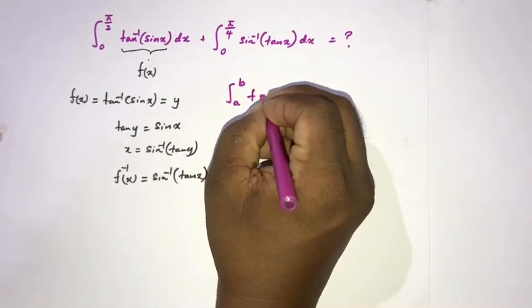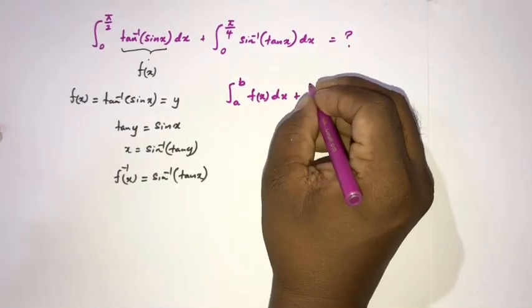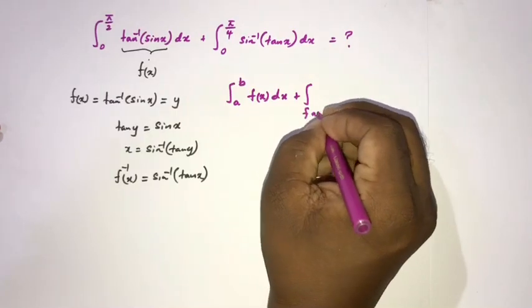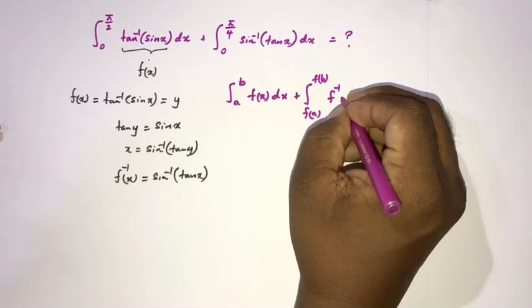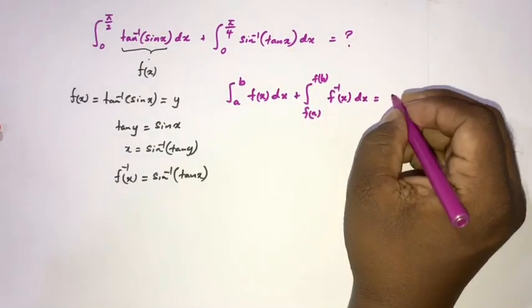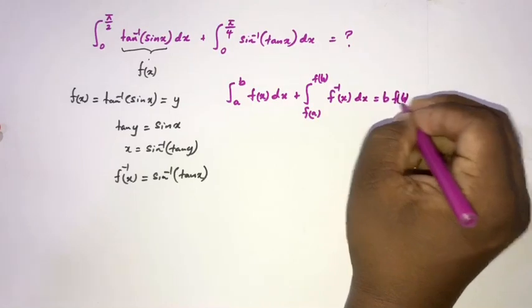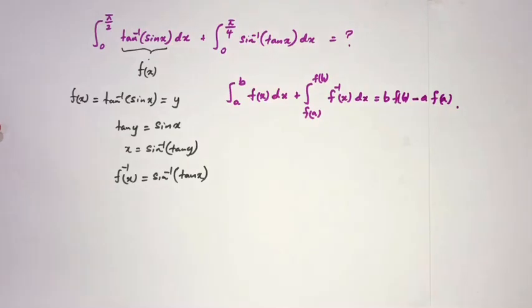This is the formula we proved in a previous video. I will add the link in the description. Here, f(x) dx plus f(a) to f(b), inverse of f(x) dx is equal to b times f(b) minus a times f(a).